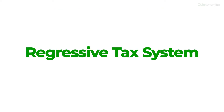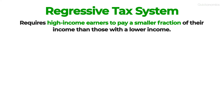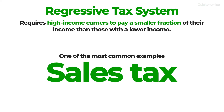Next up is the regressive tax system. Regressive taxes require high-income earners to pay a smaller fraction of their income than those with a lower income. One of the most common examples of a regressive tax is a sales tax, which is a tax placed on the sale of a good or service. Because the amount of that tax is the same for all buyers, the fraction of income devoted to paying it decreases as the income of the taxpayer increases.